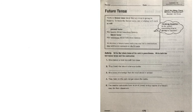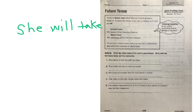We're going to look at our activity here. It says write the future tense of the verb in parentheses, write both the full future tense and the contraction. Number one says she takes a field trip with her class. We need to make this future tense, so the full future tense verb would be she will take. Then to write the contraction, it's she'll, S-H-E apostrophe L-L. She'll take.